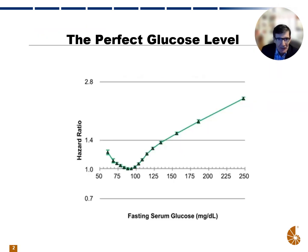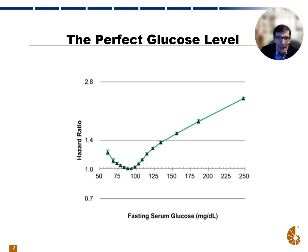You can see here from a chart that maps out fasting serum glucose versus a hazard ratio of that level of glucose. You can see that if you wanted to get to the lowest possible hazard ratio or lowest risk, you would want to be somewhere around 80 milligrams per deciliter. That's where the curve is actually at its lowest. And as glucose levels go up to the right, the hazard ratio also goes up.